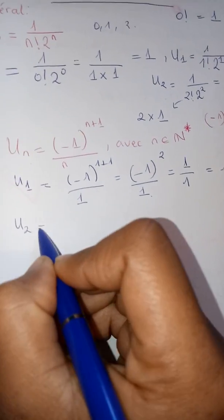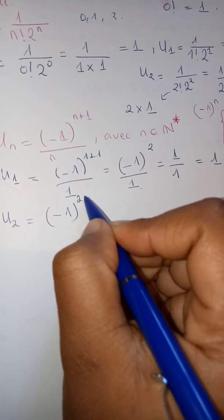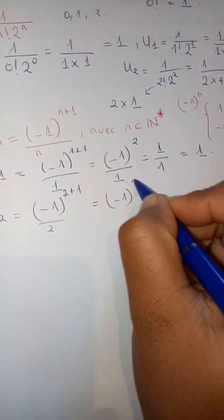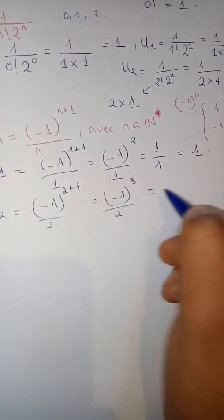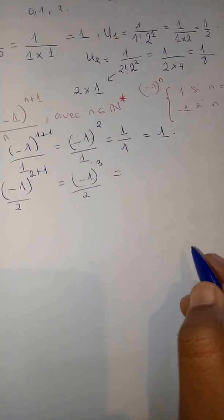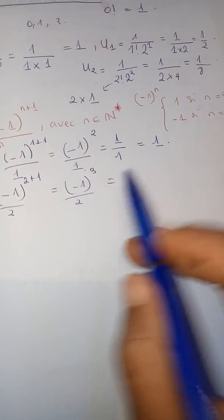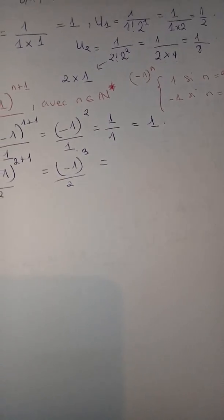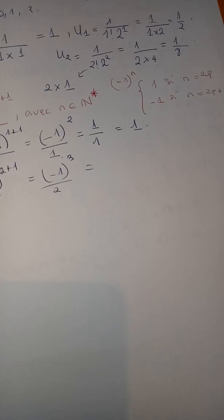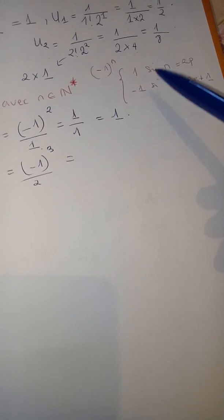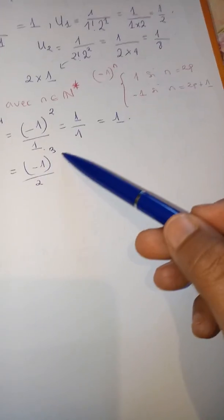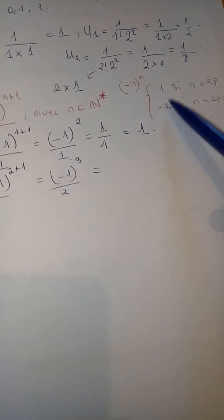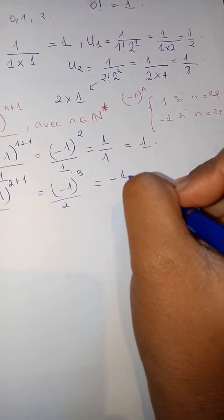Now $U_2 = (-1)^{2+1}/2 = (-1)^3/2$. Since 3 is an odd number (impair), this equals -1, so we have $-1/2$.